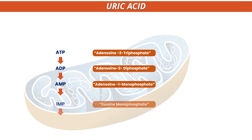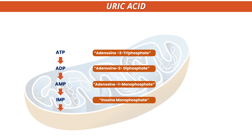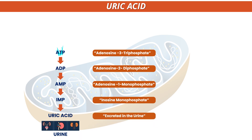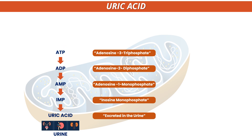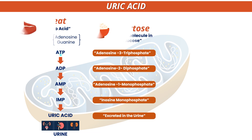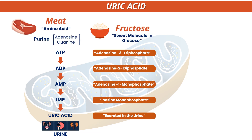AMP continues breaking apart into IMP, and then that's when we have uric acid. The uric acid is normally excreted in the urine.